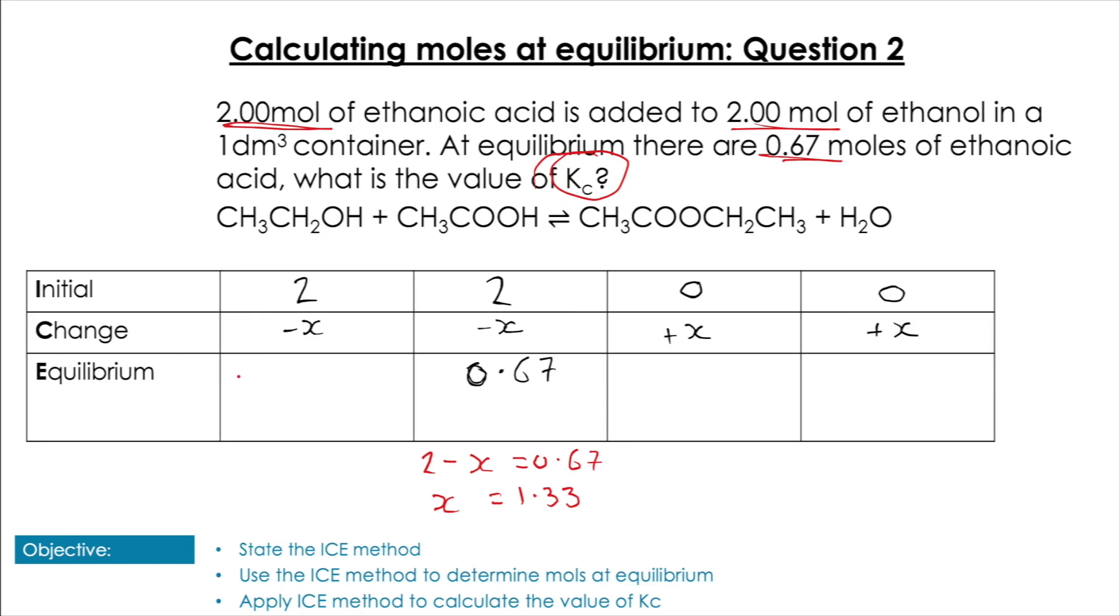We plug in x = 1.33. For ethanol, 2 - 1.33 = 0.67, which makes sense given the 1:1 ratio. For the products, 0 + 1.33 = 1.33 moles for both the ester and water.